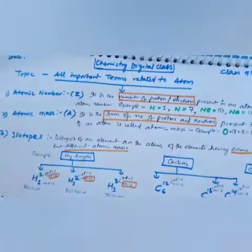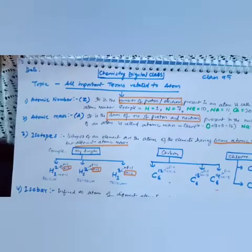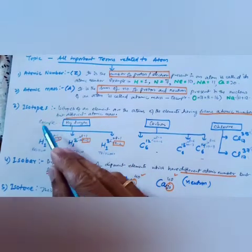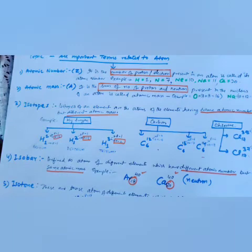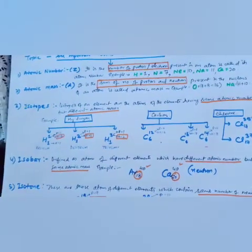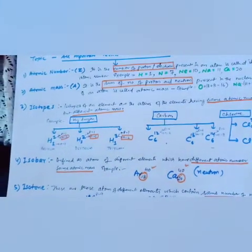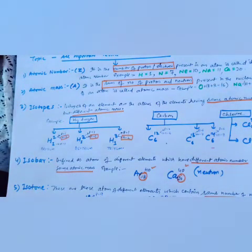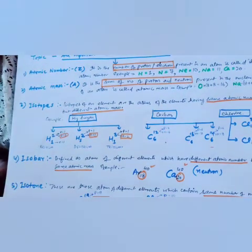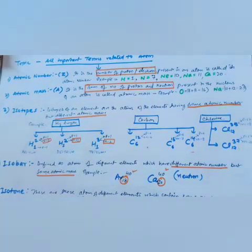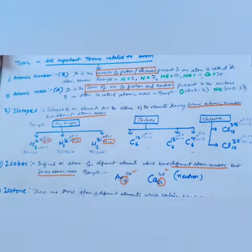Let's recapitulate: today we covered the important terms and definitions of chapter 4 — atomic number, atomic mass, isotope, isobar, and isotone. I will share a photograph of notes for you to write in your notebook. Learn all these definitions as they come in your examination. With this, chapter 4 is finished. Please complete your notes notebook as we will soon ask you to submit it for checking. Thank you and take care — stay home, stay healthy.